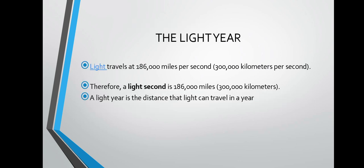Light travels at 186,000 miles per second. You have to remember that light travels at 186,000 miles per second — it is a really large distance. A light second is 186,000 miles, and a light year is the distance that light can travel in one year.